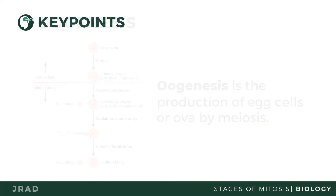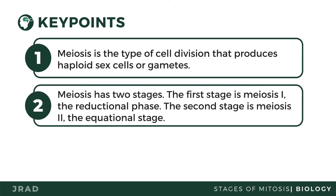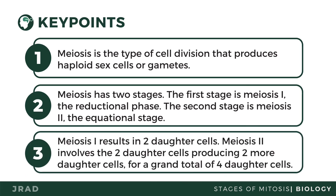In this video lesson, we discussed that meiosis is the type of cell division that produces haploid sex cells or gametes. Meiosis has two stages: the first stage is meiosis 1, the reductional phase, and the second stage is meiosis 2, the equational stage. Meiosis 1 results in two daughter cells, and meiosis 2 involves those two daughter cells each producing two more, for a grand total of four daughter cells.